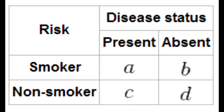Odds ratio is typically used in case control studies. You take two groups — one with disease (cases) and one without (controls) — and look at risk factor exposure. The odds of the disease group being exposed (A/C) divided by the odds of the controls being exposed (B/D) gives odds ratio = AC/BD = AD/BC.